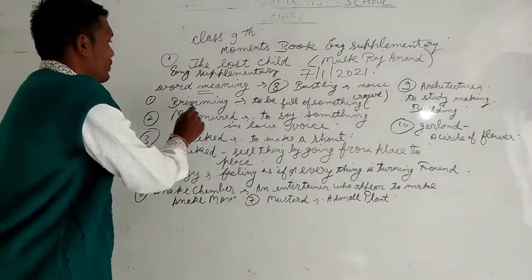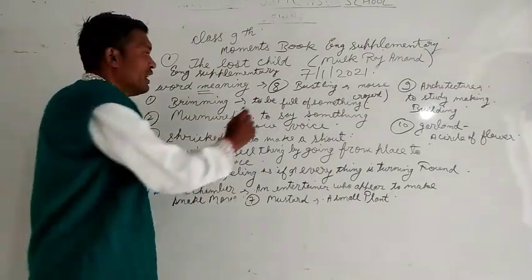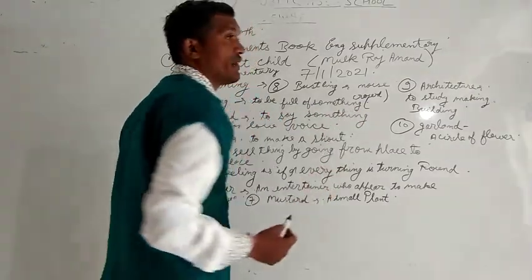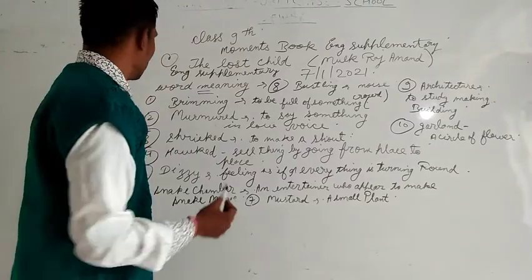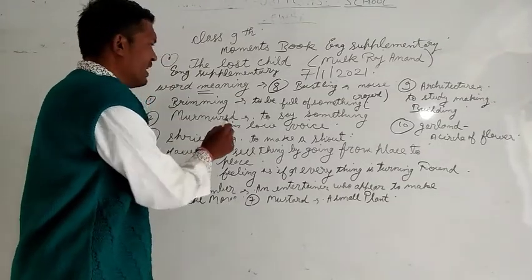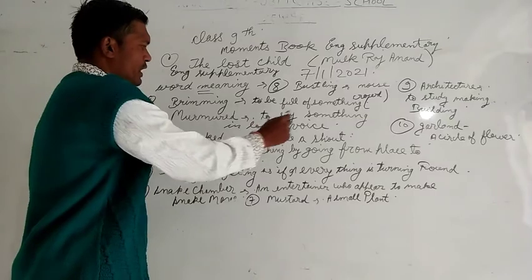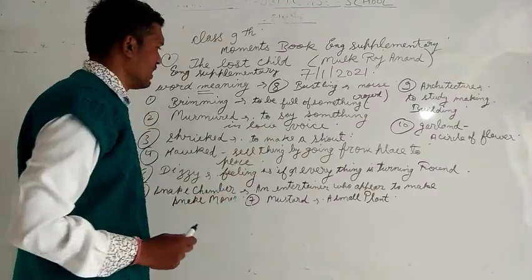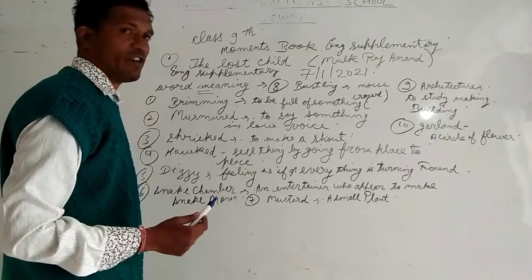First is 'teeming'. What is the meaning of teeming? To be full of something — a crowd. It means the place is very much crowded. Secondly, 'murmur' — to say something in a loud voice. Murmur means low voice, shouting, screaming — all kinds of vocal sounds.